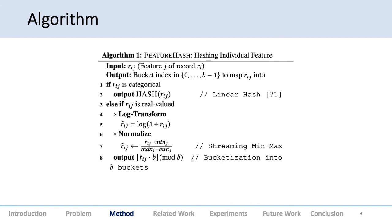For feature hash, we hash each individual feature. We have the feature of the record with output as the bucket index. For record i, feature j—if it's categorical, we use a linear hash. If it's real-valued, we first log-transform it to get more comfortable values, then normalize in a streaming fashion using streaming min-max. Finally, we output the bucket through bucketization from B buckets.